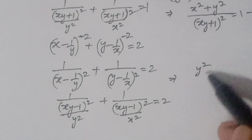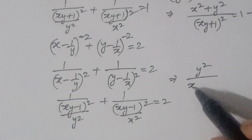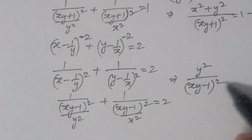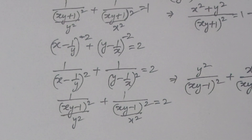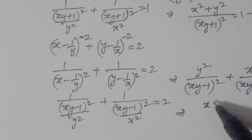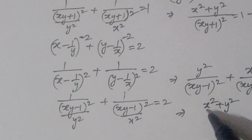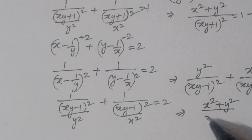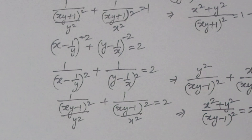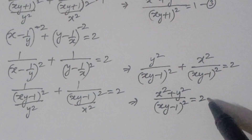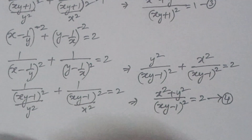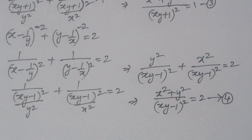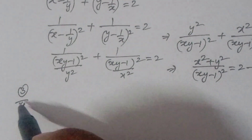Taking reciprocals: y^2/(xy - 1)^2 + x^2/(xy - 1)^2 = 2. Since the denominators are the same, combining gives (x^2 + y^2)/(xy - 1)^2 = 2. Let this be equation 4.